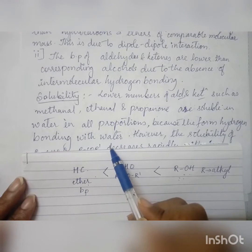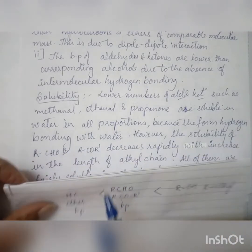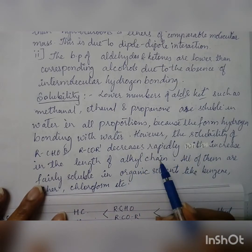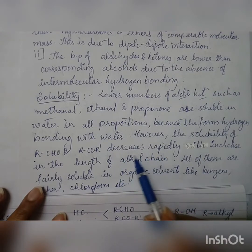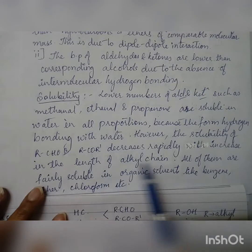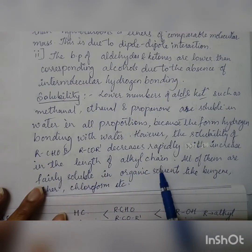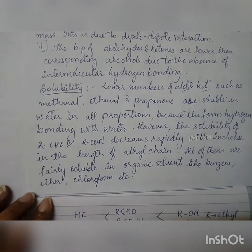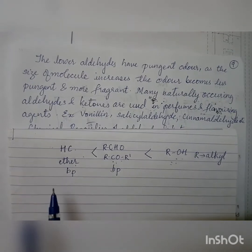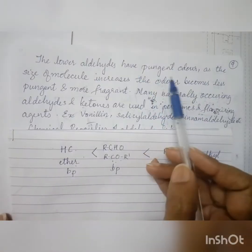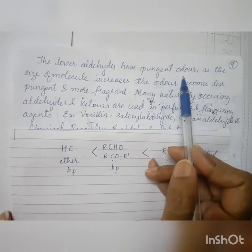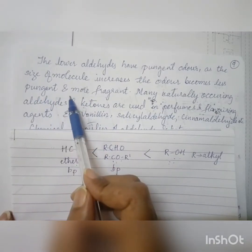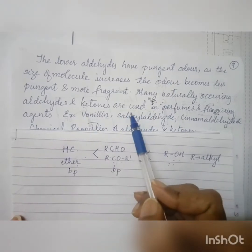When it comes to higher members, aldehydes and ketones are hardly soluble in water. There is a rapid decrease in solubility with increase in the length of the alkyl chain. Most of them are soluble in organic solvents like benzene, ether, and chloroform. The lower members have a pungent, irritating smell, but as the size of the molecule increases, the odor becomes more pleasant and fragrant.